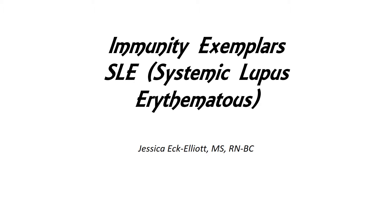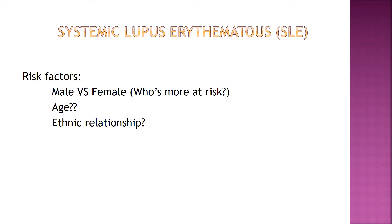This presentation will focus on the immunity exemplar of SLE, which is systemic lupus erythematosus. SLE, or lupus, is a chronic autoimmune disease that can damage any part of the body including the skin, joints, and organs within the body. It's a chronic condition because the signs and symptoms will last longer than six weeks and often for many years.